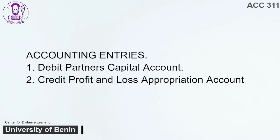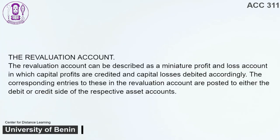Accounting Entries: 1. Debit partner's capital account. 2. Credit Profit and Loss Appropriation Account. The Revaluation Account. The revaluation account can be described as a miniature profit and loss account in which capital profits are credited and capital losses debited accordingly. The corresponding entries to these in the revaluation account are posted to either the debit or credit side of the respective asset accounts.